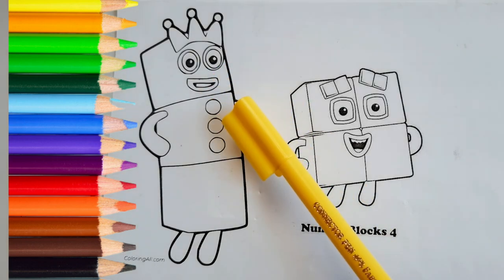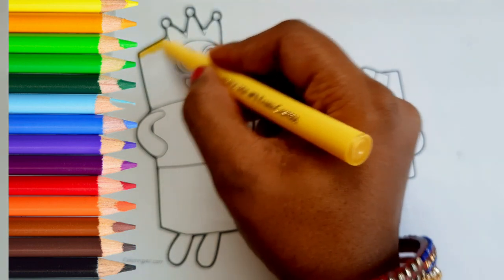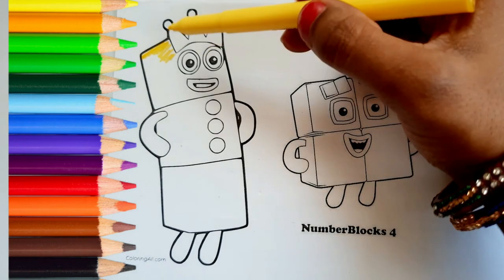For number block 3, you need yellow color. Now we will color number block 3.